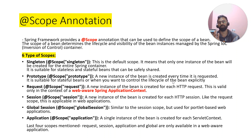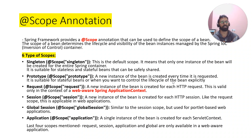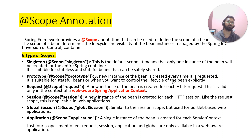The fifth is global session scope, which is similar to the session scope but used for portlet-based web applications. The sixth scope is application scope, where a single instance of a bean is created for each servlet context.